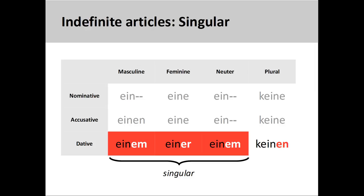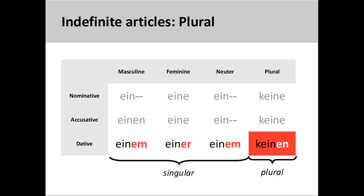These endings also indicate the number of the noun that follows. The adjective endings we saw on the previous slide, since they all modify a singular noun, are all singular endings. If the noun that is modified is plural, then you will need to use the dative plural ending, 'en'.